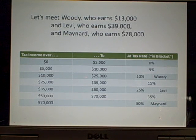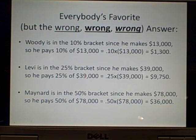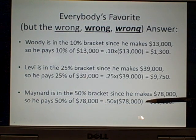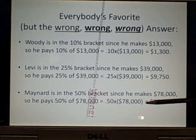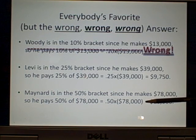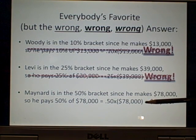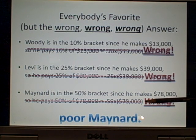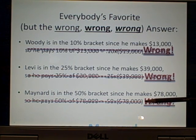I'm going to do some examples. Woody earns thirteen thousand dollars, Levy earns thirty-nine thousand dollars, and Maynard earns seventy-eight thousand dollars. If you ask people how much these people have to pay, the majority will answer that since Woody's in the ten percent bracket he pays ten percent of his income, since Levy's in the twenty-five percent bracket he pays a quarter of his income, and poor Maynard in the fifty percent bracket pays half his income. Wrong, wrong, wrong.